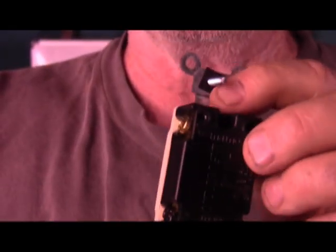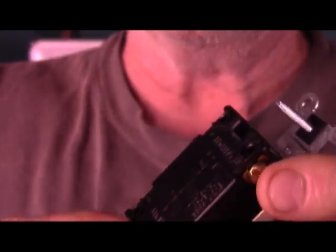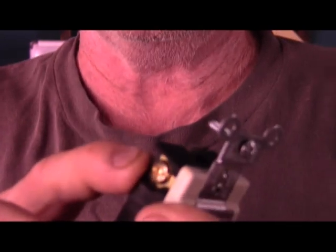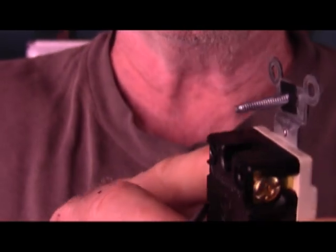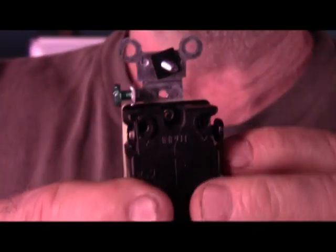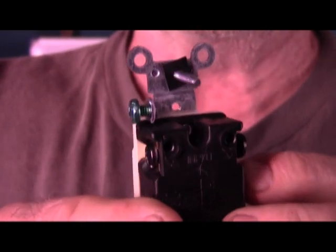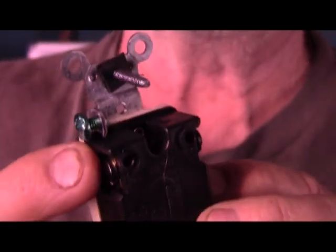Whenever you hook up a four-way, your travelers from one side go to the same color. So a twelve-three coming in from one side will go to the copper-colored screws, and a twelve-three coming from the other side will go to the black-colored screws.